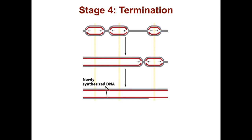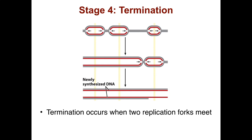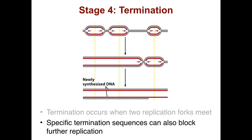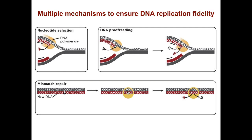The final stage of DNA replication is termination, which can occur in two different ways: it can occur when two replication forks meet, or specific termination sequences can also block further replication. There are multiple mechanisms to ensure DNA replication fidelity, including the selection of the correct nucleotide by the DNA polymerase, proofreading of the DNA that has been synthesized by the polymerase, and mismatch repair.